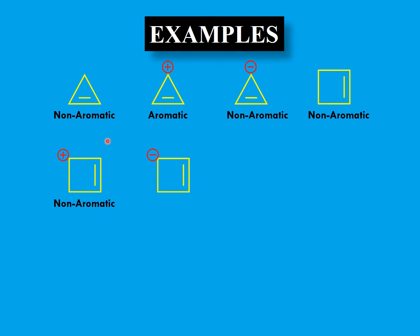What if we have a negative charge on the cyclobutene ring? Again, there is conjugation between the negative charge and the double bond, giving four electrons in conjugation. However, because there is an sp3 carbon that breaks the closed loop, not all carbons are involved in conjugation, so this ion is non-aromatic rather than anti-aromatic.